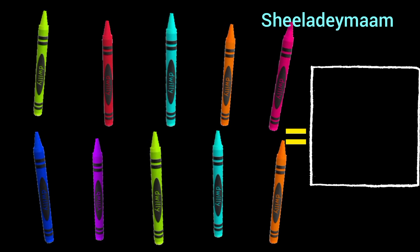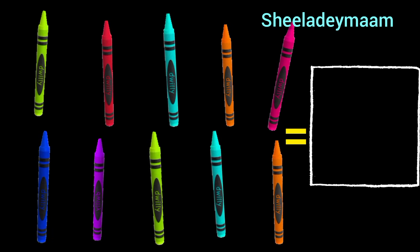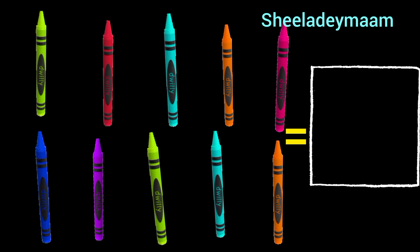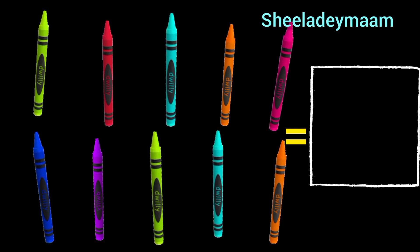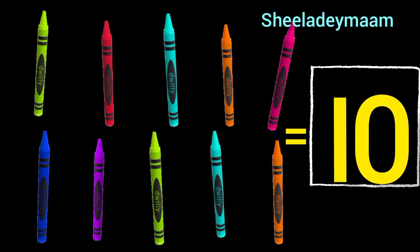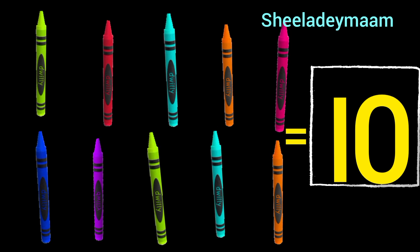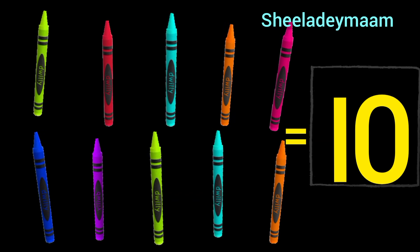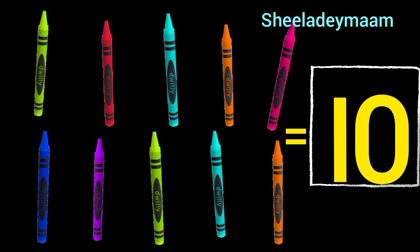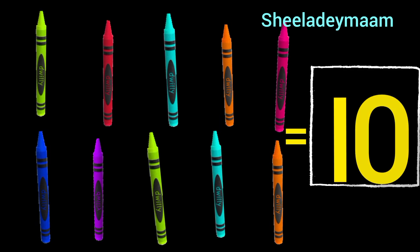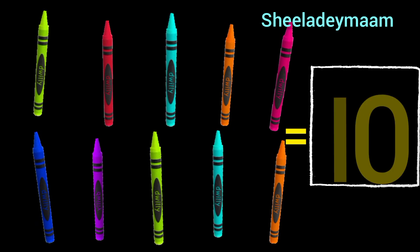Children, there are 10 crayons. So write number 10 in the box. Children, this is number 10.